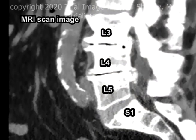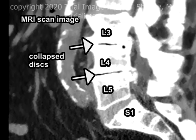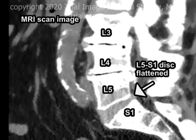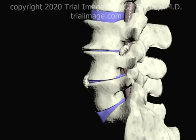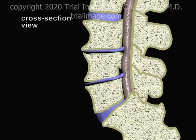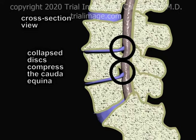Here is what the abnormalities we've been discussing look like on an MRI image. In addition to the loss of normal intervertebral spacing, collapsed discs commonly bulge or herniate into the spinal canal, compressing the nerve fibers of the cauda equina.